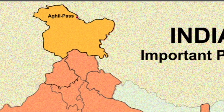Next one is the Karakoram Pass. It lies between India and China in the Karakoram range. The pass is in a saddle between two mountains and about 45 meters wide.